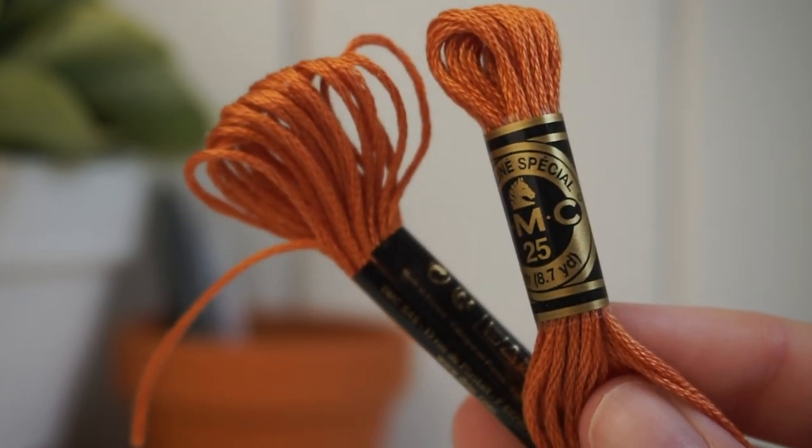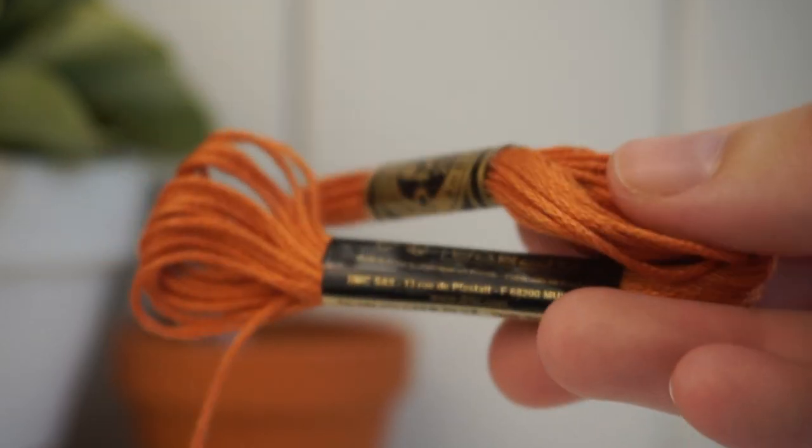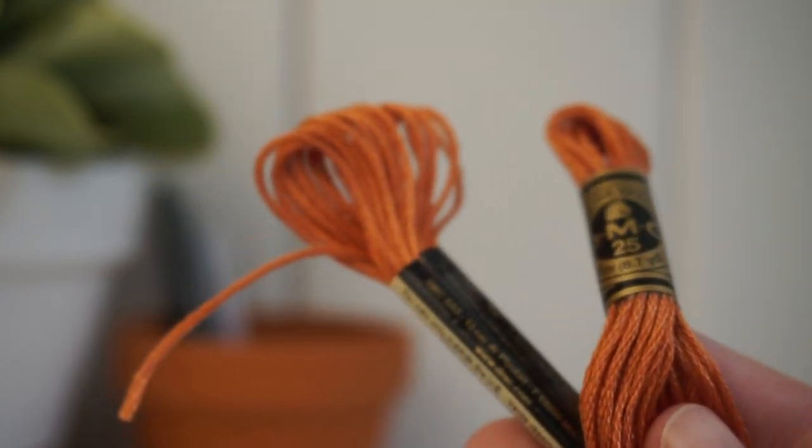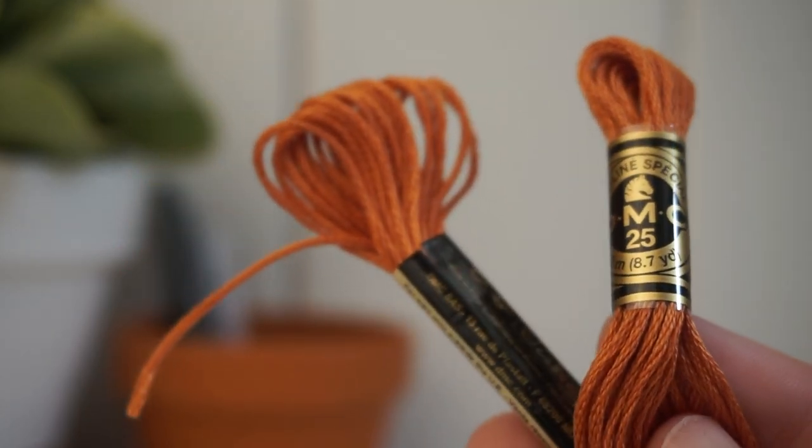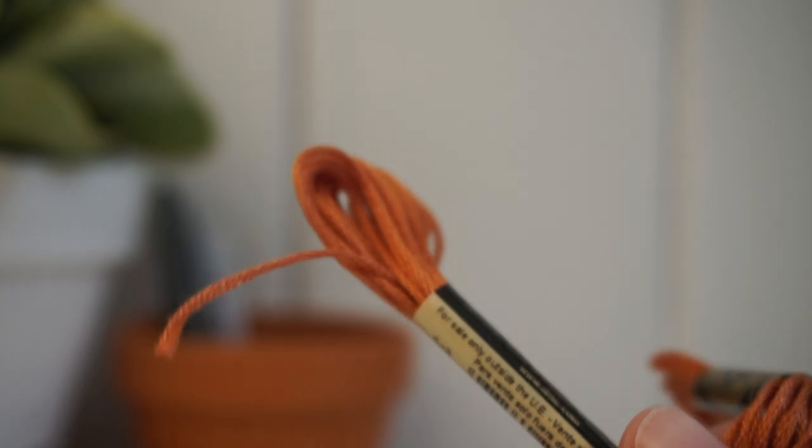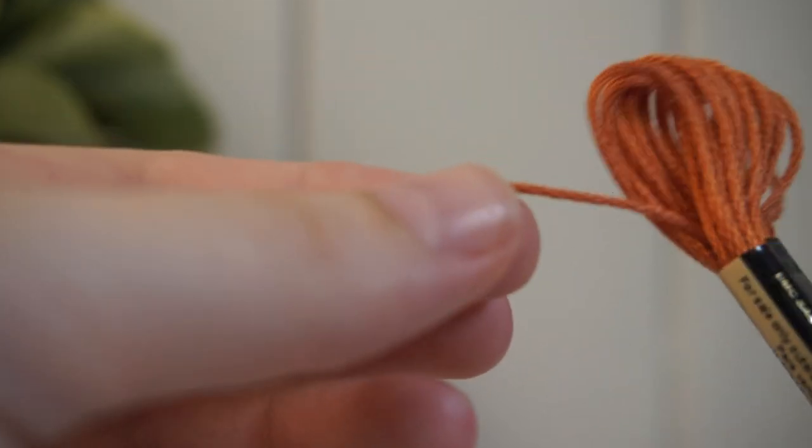DMC embroidery floss is made up of six different strands. It's six tiny strands of thread that make up one piece of floss, and we're going to take a look into that.